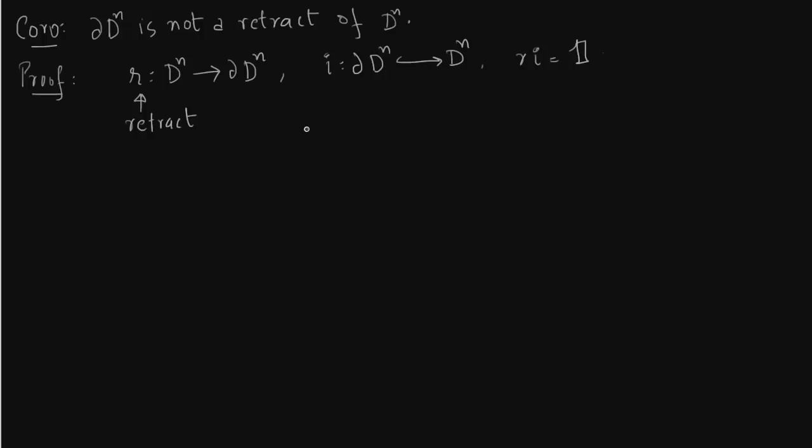Then RI will give you an identity map. First you include and then you retract, you get an identity map. Now you construct the long exact sequence, again same as previous one.